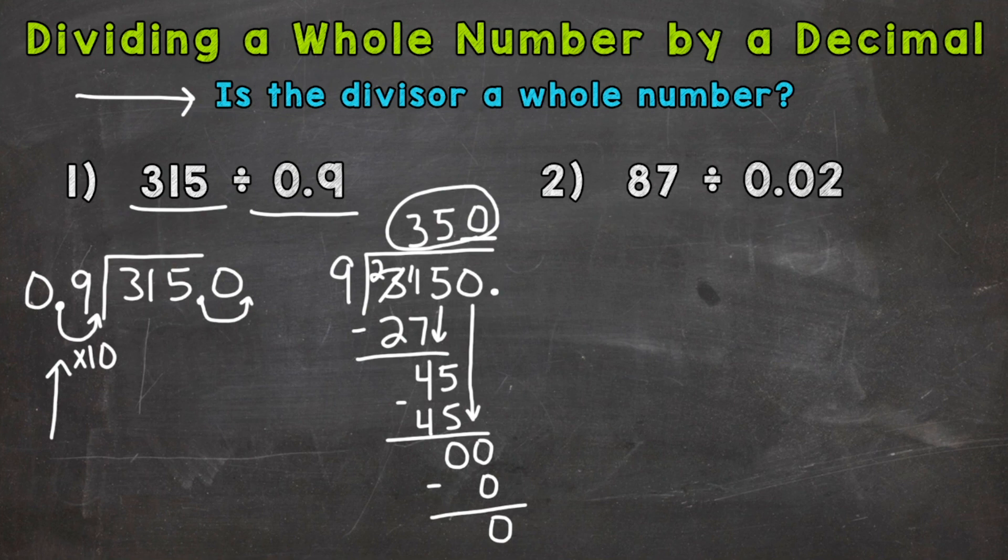So on to number 2, where we have 87 divided by 2 hundredths. Now this one's going to be a little bit different. Same process and everything, but you'll see what I mean here in a second. So the question we need to ask ourselves, is the divisor a whole number? We have 2 hundredths. No.